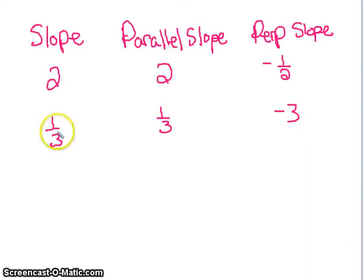If we are writing parallel and perpendicular slopes, if we have one-third, parallel slope is going to be one-third, perpendicular is going to be the opposite reciprocal, so since it's positive, it's negative, and the reciprocal of one-third is three over one, or three.